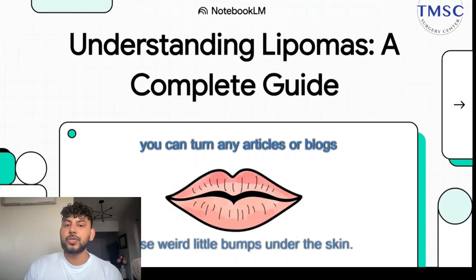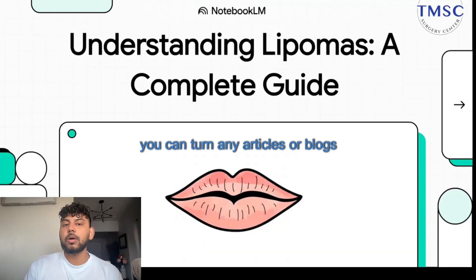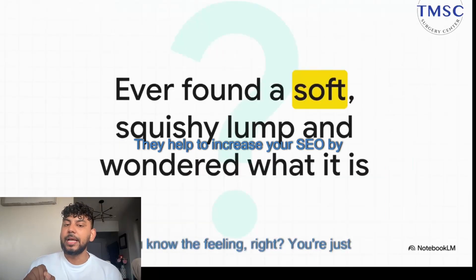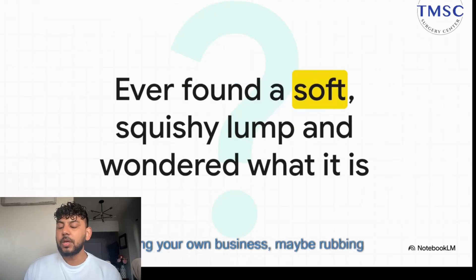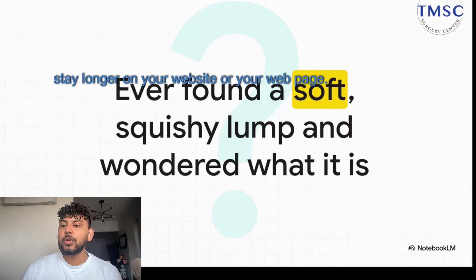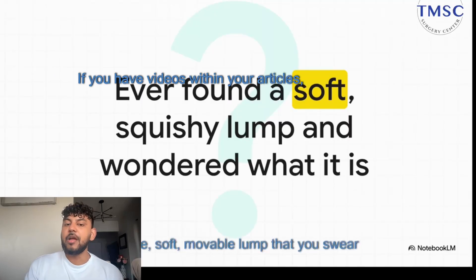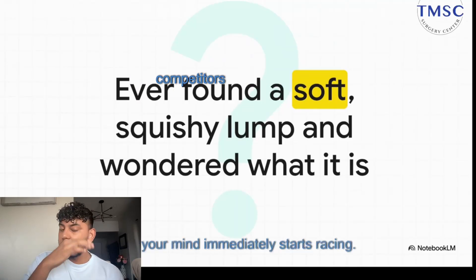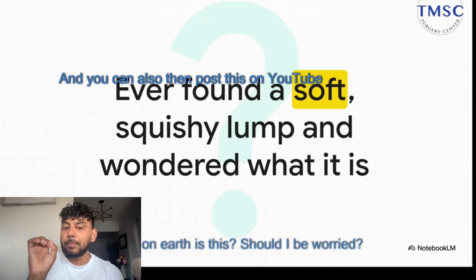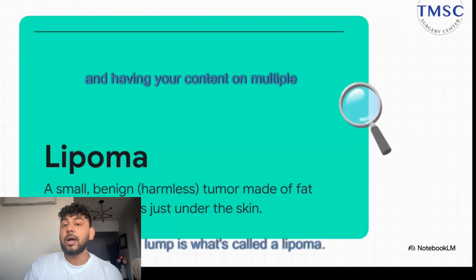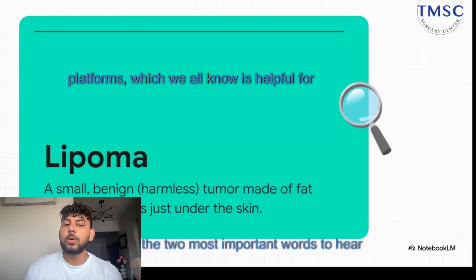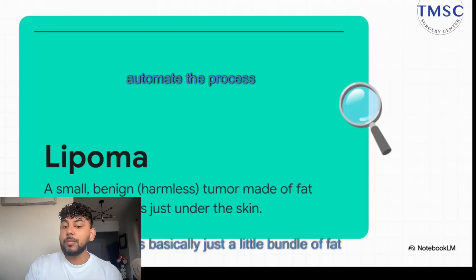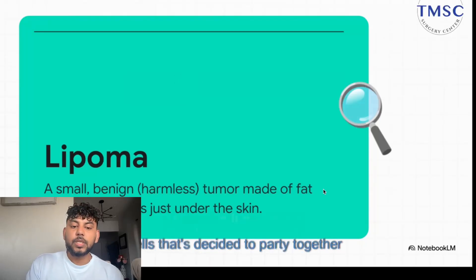In today's video, I'll be showing you how you can turn any articles or blogs into an engaging video overview. These videos are really good — they help increase your SEO by increasing engagement and dwell time, because people will stay longer on your website if you have videos within your articles. You also stand out with custom videos compared to your competitors on Google, and you can post this on YouTube or other platforms. Having your content on multiple platforms is helpful for SEO and ranking, and you can do this completely free using AI.